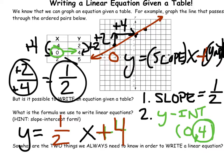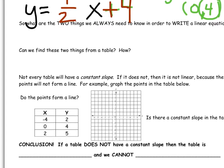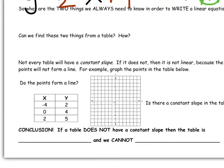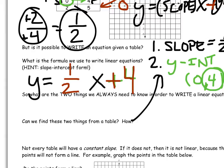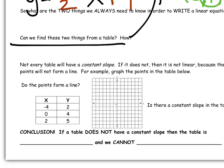Do you guys want to do more examples? Yeah! We're going to do them anyway — I just thought you'd feel happier when I asked. This asks what two things do we need to write the linear equation. We already wrote those: slopage and Y-intercept. Can we find these two things from a table? As it turns out, we can find at least the slopage. Finding the Y-intercept may be kind of tricky sometimes.